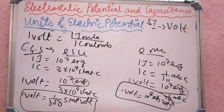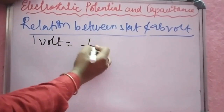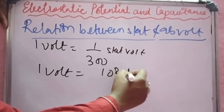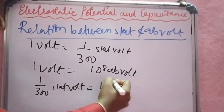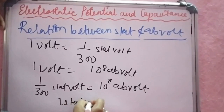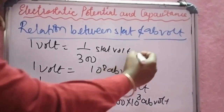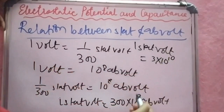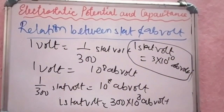Now I am going to see the relation between statvolt and femtovolt. 1 volt is equal to 1 by 300 statvolt. Also, 1 volt is equal to 10 to the power of 8 femtovolts. So 1 by 300 statvolt is equal to 10 to the power of 8 femtovolts. Therefore, 1 statvolt is equal to 300 into 10 to the power of 8 femtovolts, which gives 1 statvolt equal to 3 into 10 to the power of 10 femtovolts.